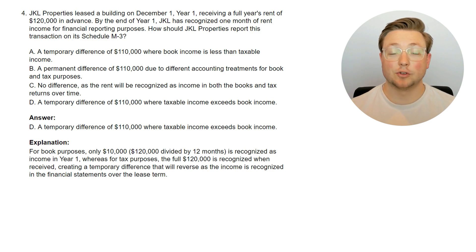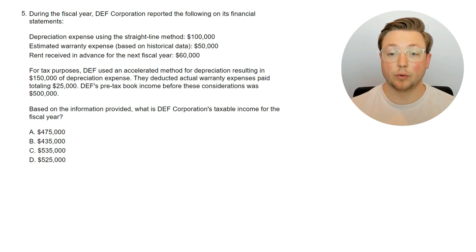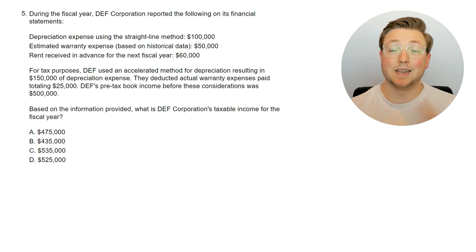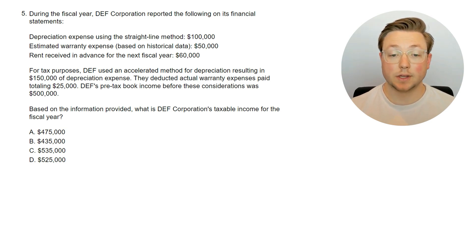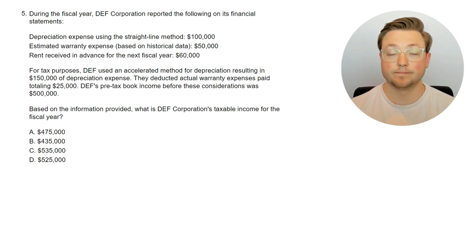That was question four. Let's go to the last question to put it all together. Here's question five. We have learned about multiple temporary differences in this video. During the fiscal year, DEF Corporation reported: depreciation expense using the straight-line method of $100,000, estimated warranty expense of $50,000, and rent received in advance of $60,000. For tax purposes, DEF used accelerated depreciation of $150,000, deducted actual warranty expenses paid of $25,000, and DEF's pre-tax book income was $500,000. What is DEF Corporation's taxable income? Pause the video and figure out the calculation.